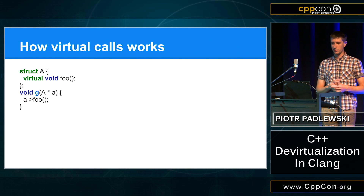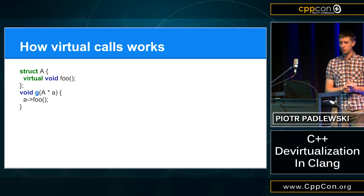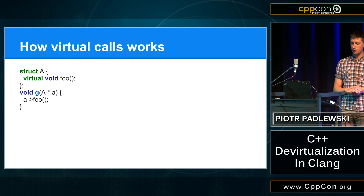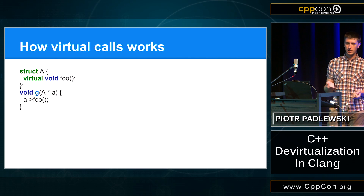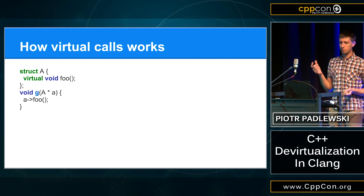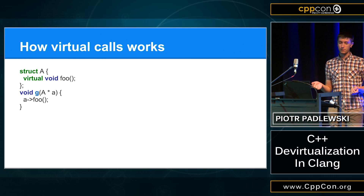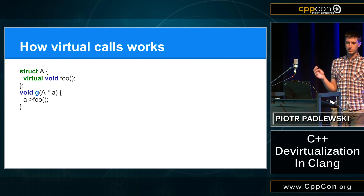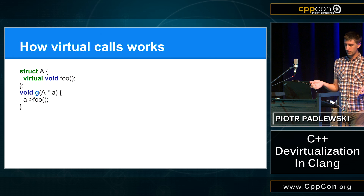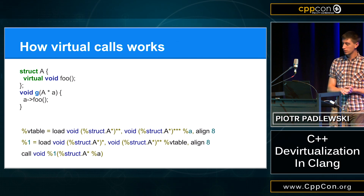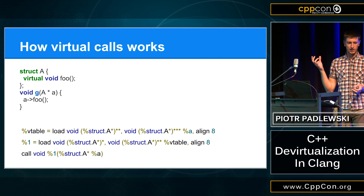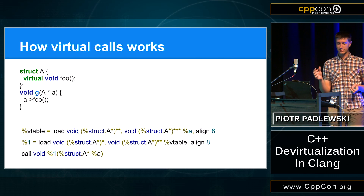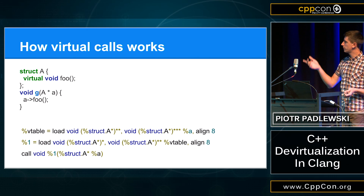Let me first tell you briefly how virtual calls work. If you have some virtual function, this class will have an additional pointer, which will be a virtual pointer. And this pointer will point to a virtual table. A virtual table is just a table generated for each dynamic class with some virtual functions. How a virtual call works is that we'll take this pointer, load the value of this pointer, then having the value will load the exact function, and then we will call it.